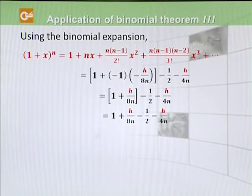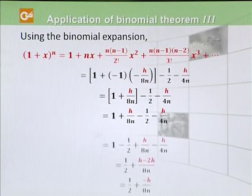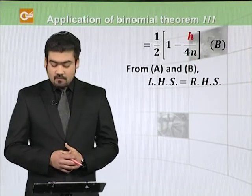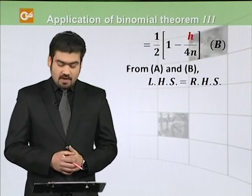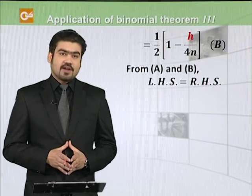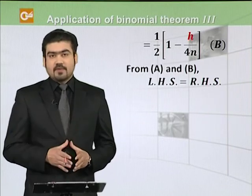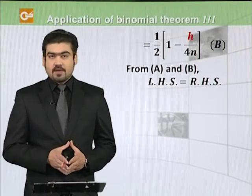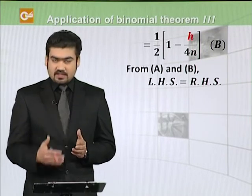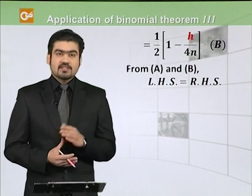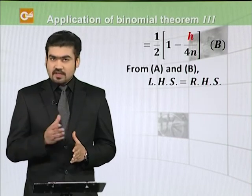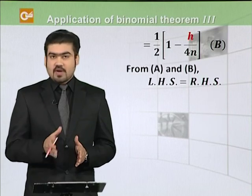So we have: 1 plus h by 8n, minus 1 over 2, minus h by 4n. After simplifying, this equals 1 over 2, minus h by 8n — so taking 1 over 2 common: (1 over 2) multiplied by (1 minus h over 4n). So we call this expression B. Abhi aapne dekha ke expression A was exactly equal to this form, aur expression B bhi isi form mein hai. So right hand side aur left hand side pe alehda alehda binomial expansion apply ki — both expressions end up at the same result. This clearly shows that left hand side equals right hand side, and the statement is proved.